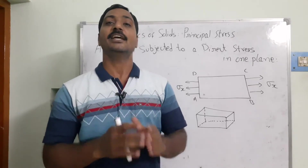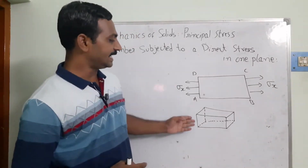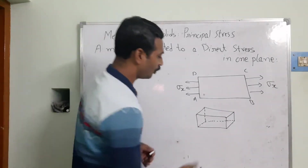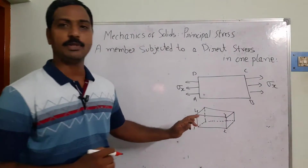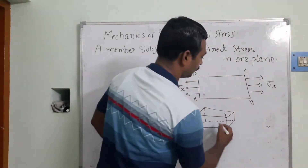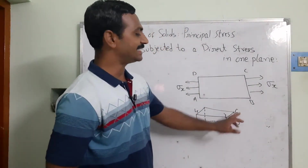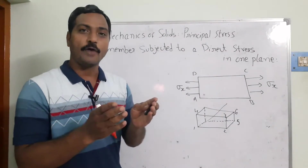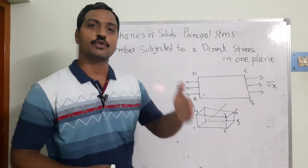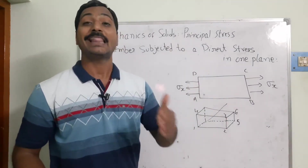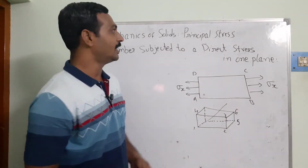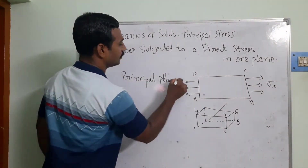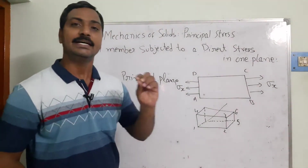Before getting into this, let me explain: the principal plane is nothing but the plane which carries zero shear stresses. Suppose we take a three-dimensional object — this is the combination of different planes. I am taking one, two, three, four as one plane, and two, three, five, six as another plane. If I make a section at that point, it will become two halves and generate a new surface. That new surface is taken as the principal plane, which carries zero shear stresses and only carries normal stresses.